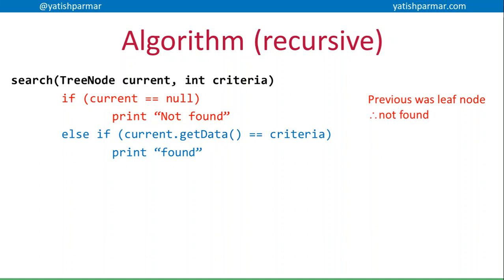If the current node matches the data that I'm looking for, the criteria, then obviously I've found what I'm looking for, and I can print out the other associated data stored at that node.